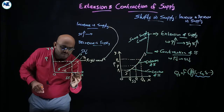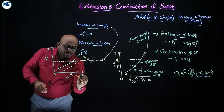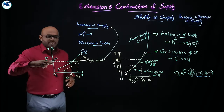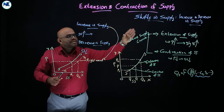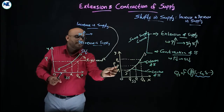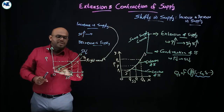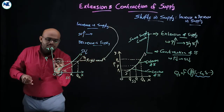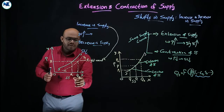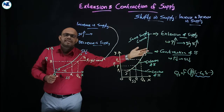At the same price, quantity supplied increases from OQ1 to OQ2. There is no change in price — the price remains the same. But quantity supplied increased from Q1 to Q2 because of changes in factors other than price. This is increase in supply represented by a rightward shift.